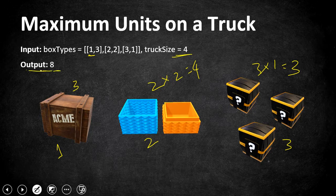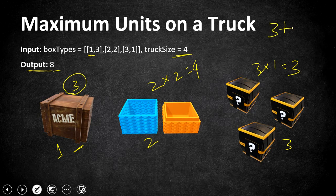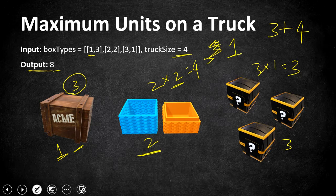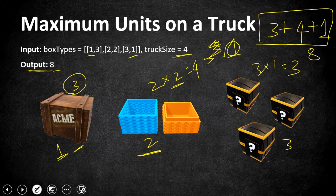We have to fill our truck with four boxes max and return the maximum number of units. We pick the one box of type 1, giving us three units. Then we take both boxes of type 2, adding four more units, filling our truck to three boxes used. We have one space left, so we pick one box from type 3 for one unit, giving us a total of eight units as our output.